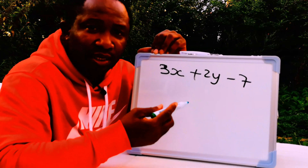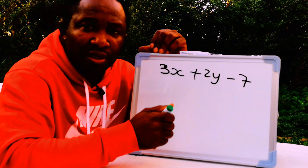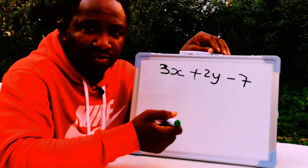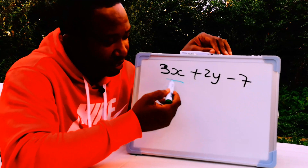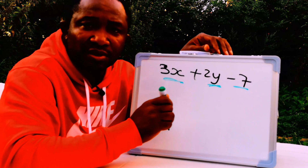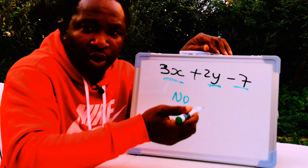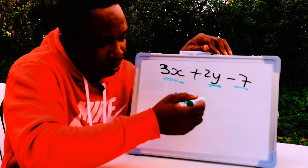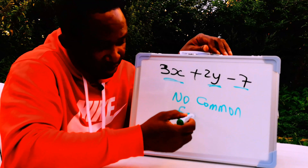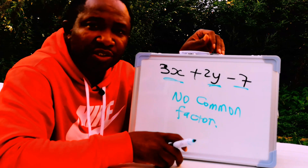Let's consider 3x plus 2y minus 7. What is the common factor? Looking at 3x, 2y, and minus 7, there is nothing in common between all three terms. So there is no common factor here, and this is a finished expression — we cannot simplify it further.